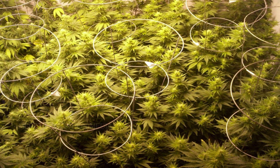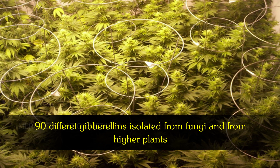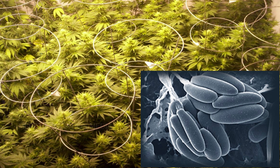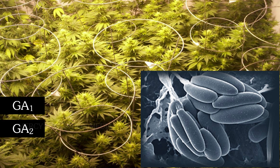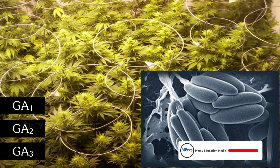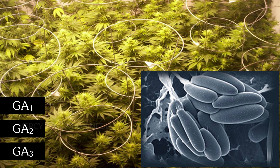There are over 90 different gibberellins isolated from fungi and from higher plants. Gibberellins occur in various plant organs. They are named as GA1, GA2, GA3, etc. These phytohormones occur in all groups of plants.